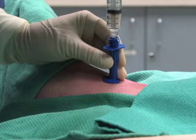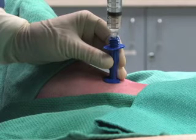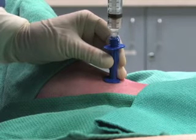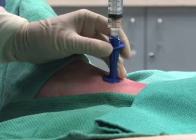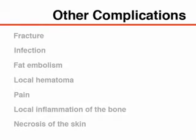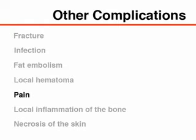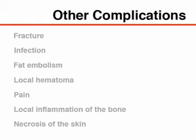To prevent blockage, the line should be flushed with 3 to 5cc of saline every 15 minutes. Other complications include fracture, infection, fat embolism, local hematoma, pain, local inflammation of the bone at the insertion site, and necrosis of the skin at the insertion site.